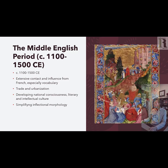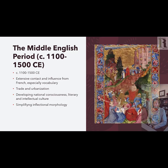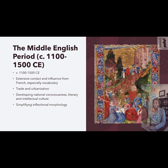In the Middle English period, we get an expanding population, wealth, and material culture of Britain. During this period, England is conquered by a French-speaking nation called the Normans, and French becomes the upper-class language for a few hundred years. There is extensive contact and influence from French, especially in vocabulary. This is also a period of developing trade and urbanization. But later in this period, there will be a long war between England and France, during which we might see an incubating national consciousness of Englishness and the rising stock of the English language as something that can be used for literature, scholarship, religion, and so on. During this period we also have a continuing reduction and simplification of inflectional morphology.